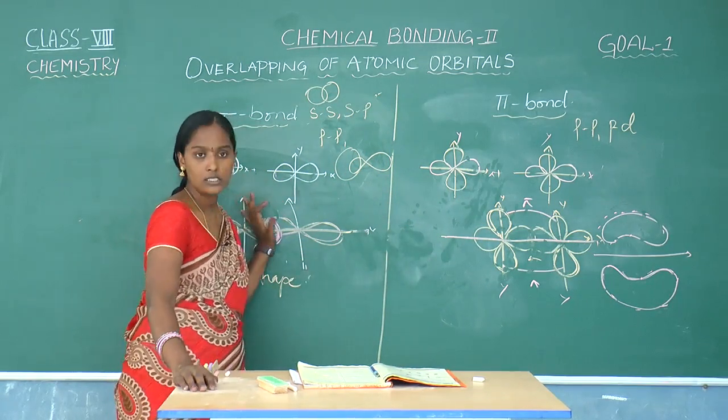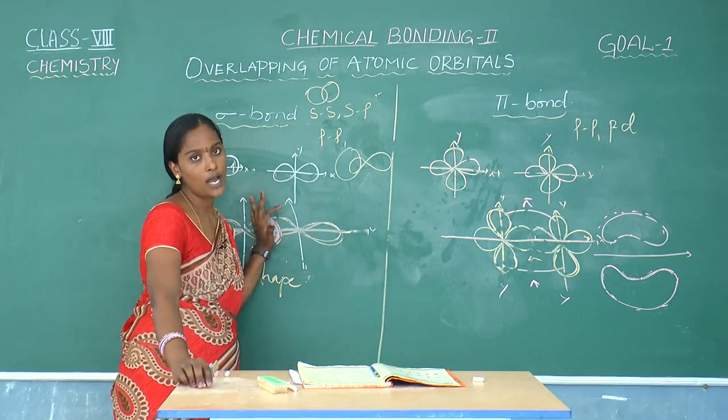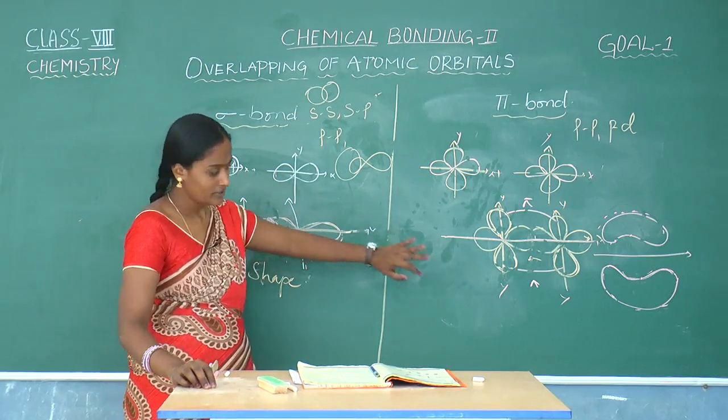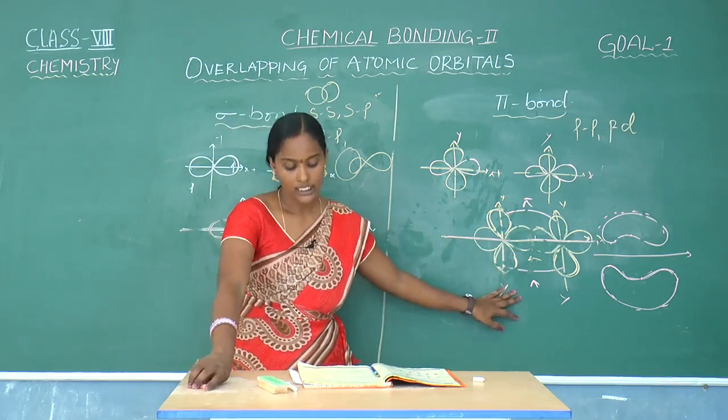Only one sigma bond should be formed between any two atoms, and after the formation of a sigma bond then only pi bond takes place.